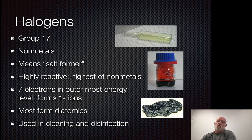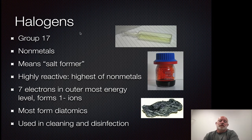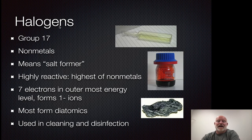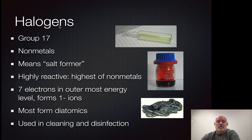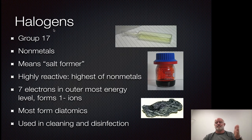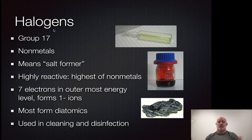Now we're going to shift gears and go way to the other side of the periodic table — group 17, or our halogens. They're all non-metals in this group, and as non-metals, they're the most reactive non-metals. You might be thinking, isn't group 18 going to be our most reactive? Actually, they're not — the noble gases are not reactive at all. So as a group, the halogens are going to be our most reactive non-metals. We have super reactive metals — alkaline metals — and we have super reactive non-metals — halogens. Both are kind of bookends to the whole periodic table, because as you move to the left and right, you get more reactive substances.